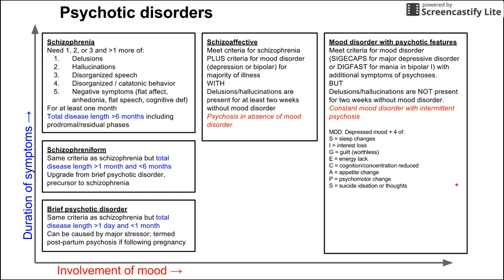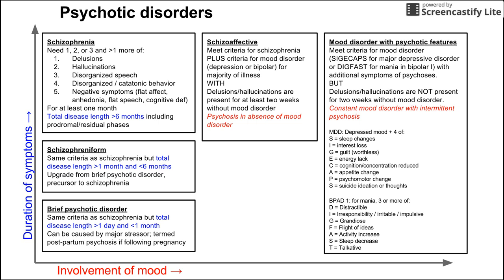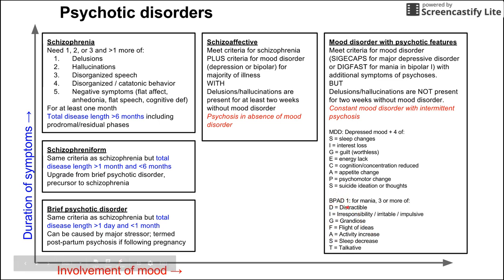For bipolar disorder with psychotic features, you need to meet the DIG FAST criteria for mania: three or more of distractibility, irresponsibility/irritability/impulsiveness, grandiose thoughts and behaviors, flight of ideas, activity increase, sleep decrease, and talkativeness. If you meet bipolar disorder criteria and also show symptoms of psychosis, you could have bipolar disorder with psychotic features.